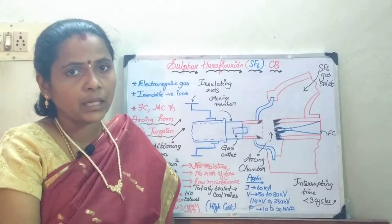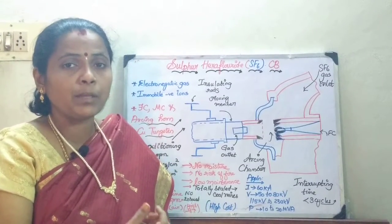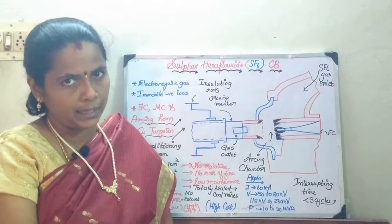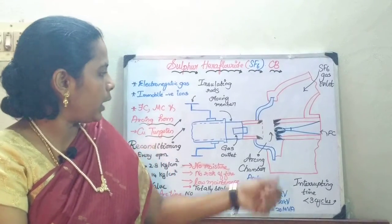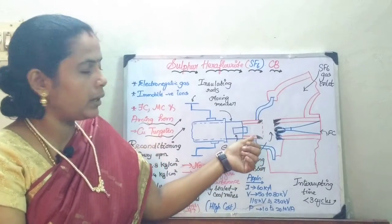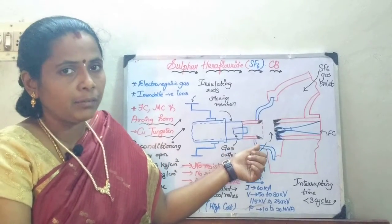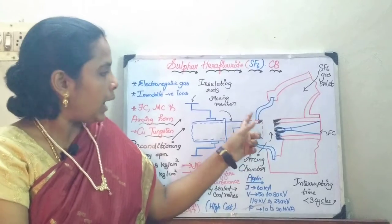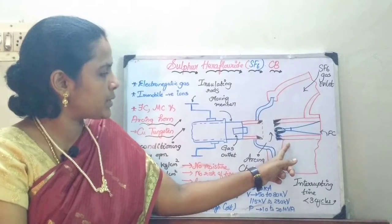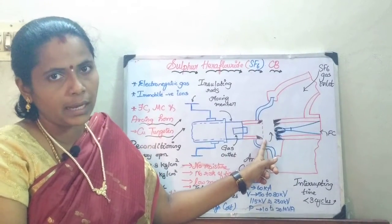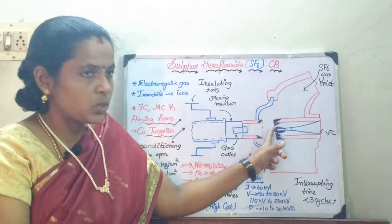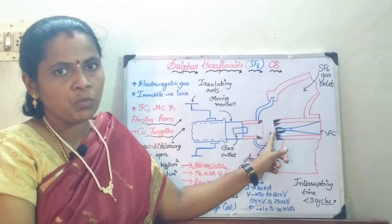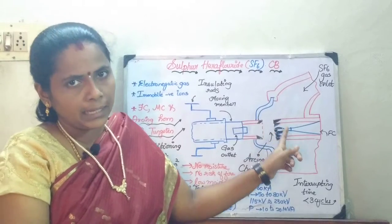When we say it has an electronegative gas, it has the capability of absorbing the electrons in the arcing path. In the circuit breaker, you are going to have a fixed contact and a moving contact, and under a fault whenever they get separated, an arc is struck between the fixed contact and the moving contact. Whenever there is a process of arcing, it is nothing but a conducting path of electrons.